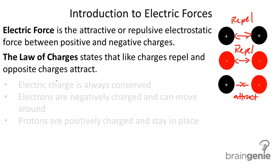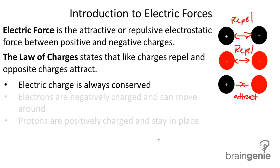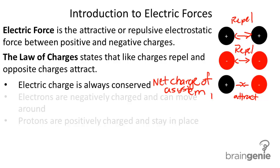Pretty simple rule to remember. Now, a couple of key points. The first key point is that electric charge is always conserved. Think of it as similar to the law of conservation of energy — you can't create charge or destroy it. The net charge of a system is always constant.